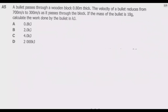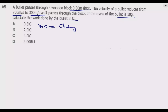Question A5: A bullet passes through a wooden block 0.8 metres thick. The velocity of the bullet reduces from 700 metres per second to 300 metres per second as it passes through the block. We are given the thickness of the wooden block, the initial velocity, the final velocity, and the mass of the bullet in grams. We need to find the work done.